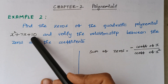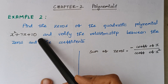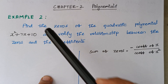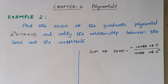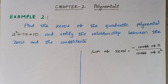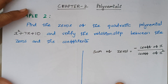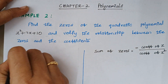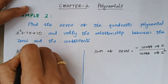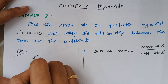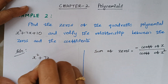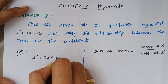This is our given quadratic equation. We are going to solve this quadratic equation, and the first thing is we need to calculate the zeros. So, x² + 7x + 10.